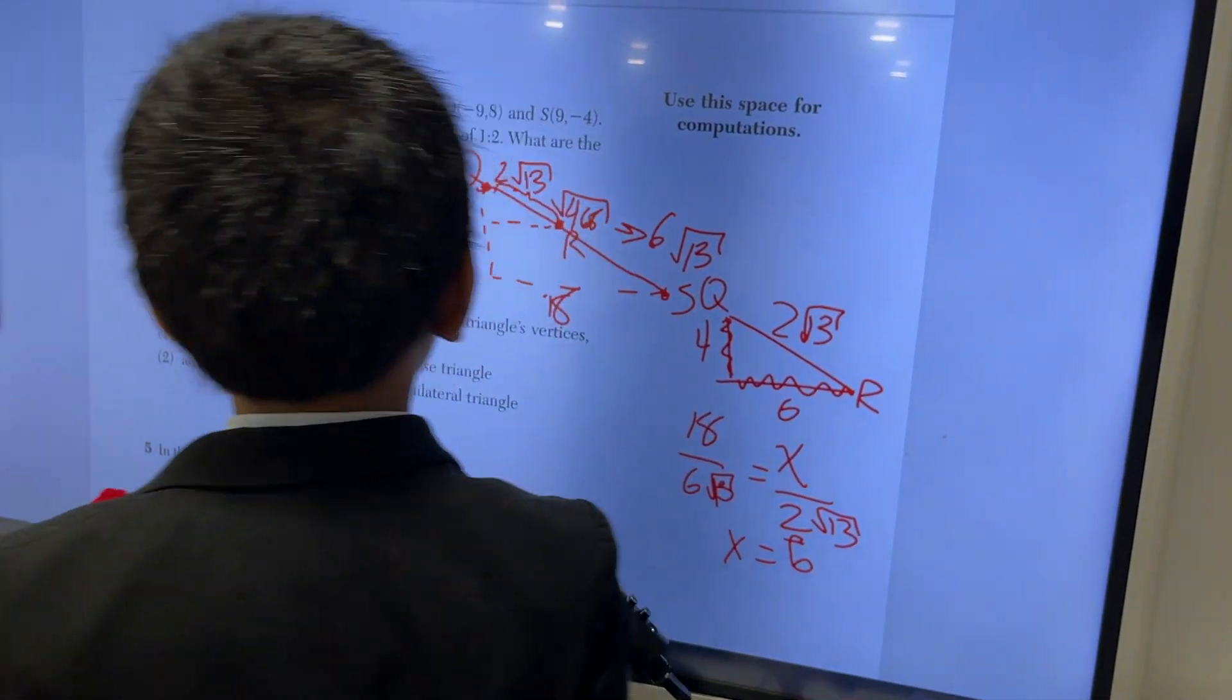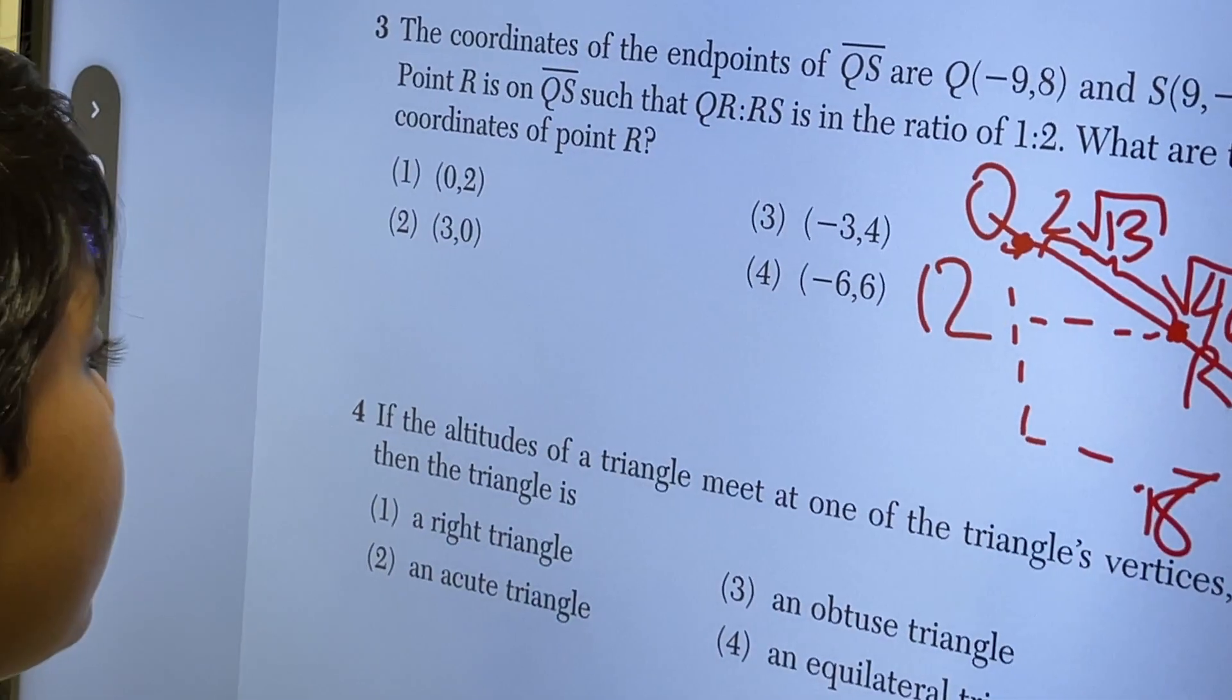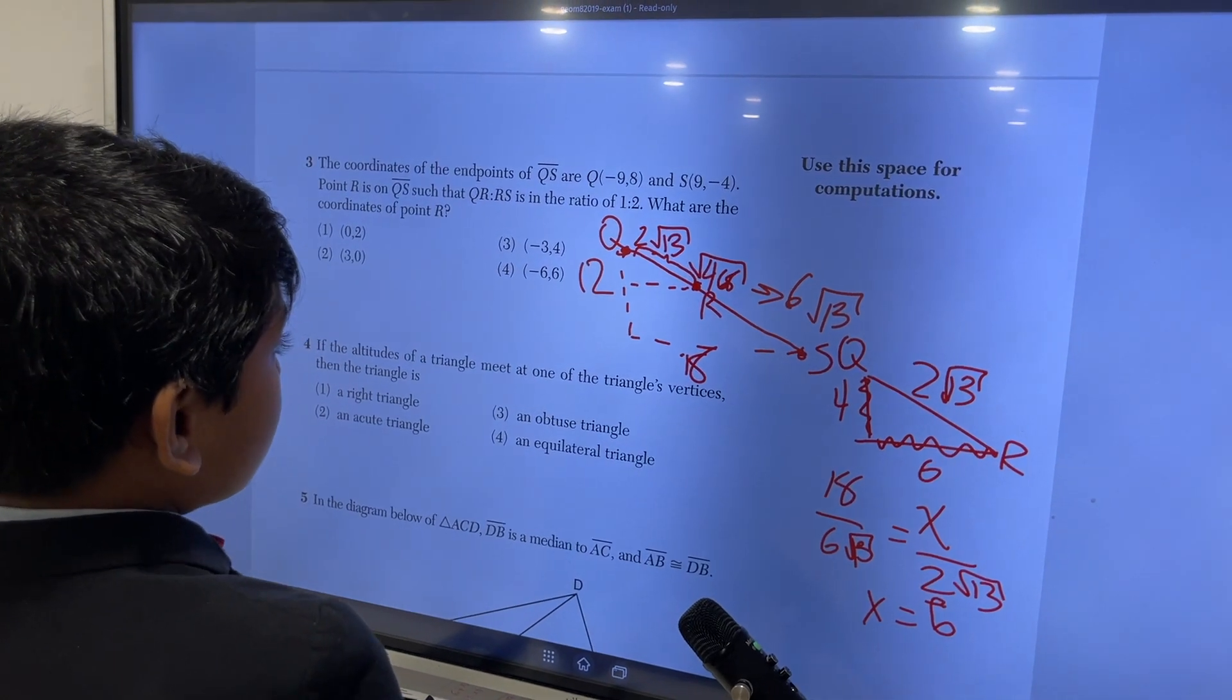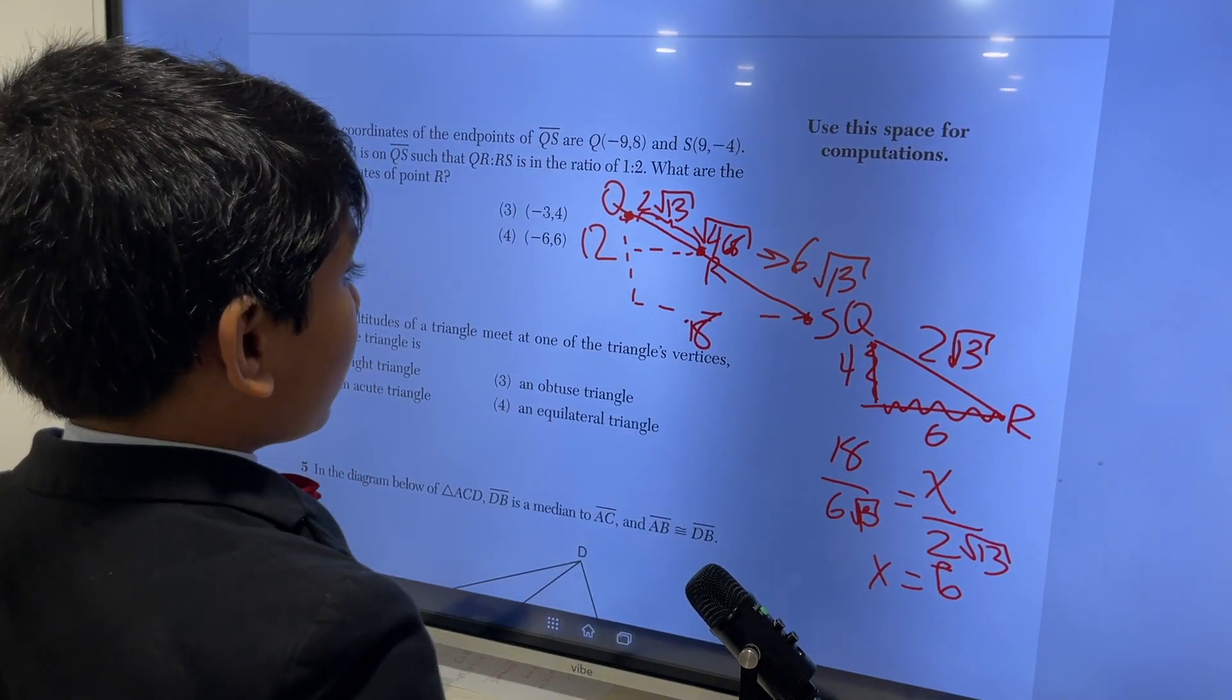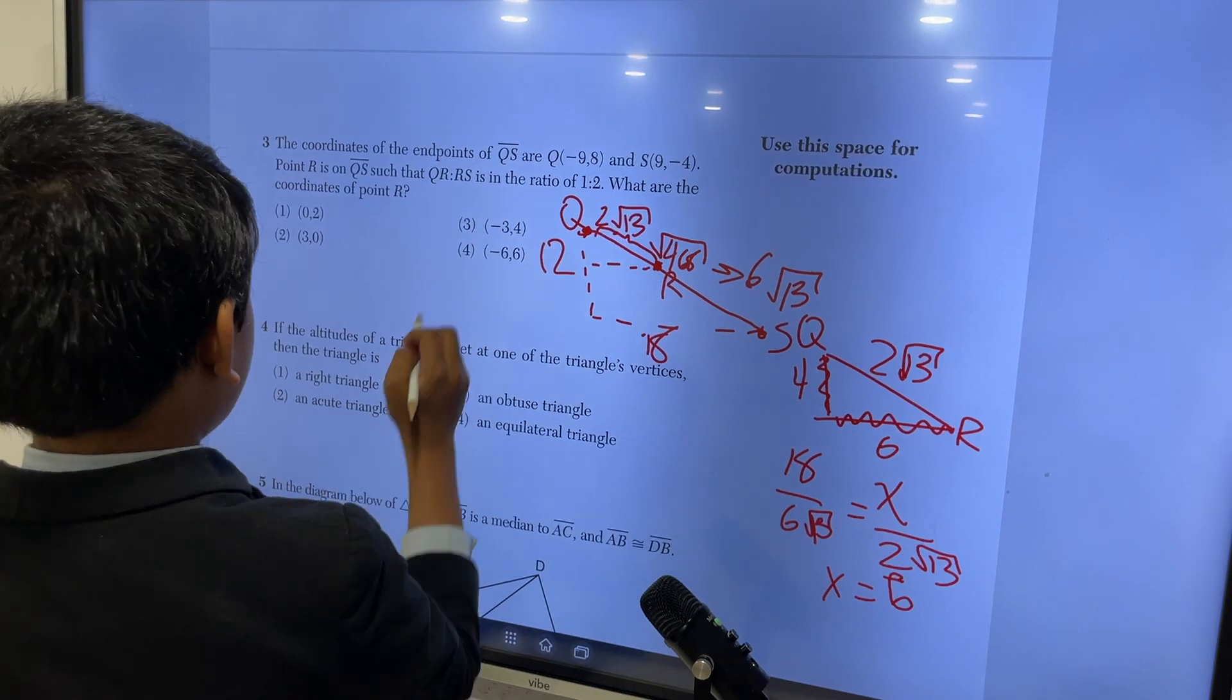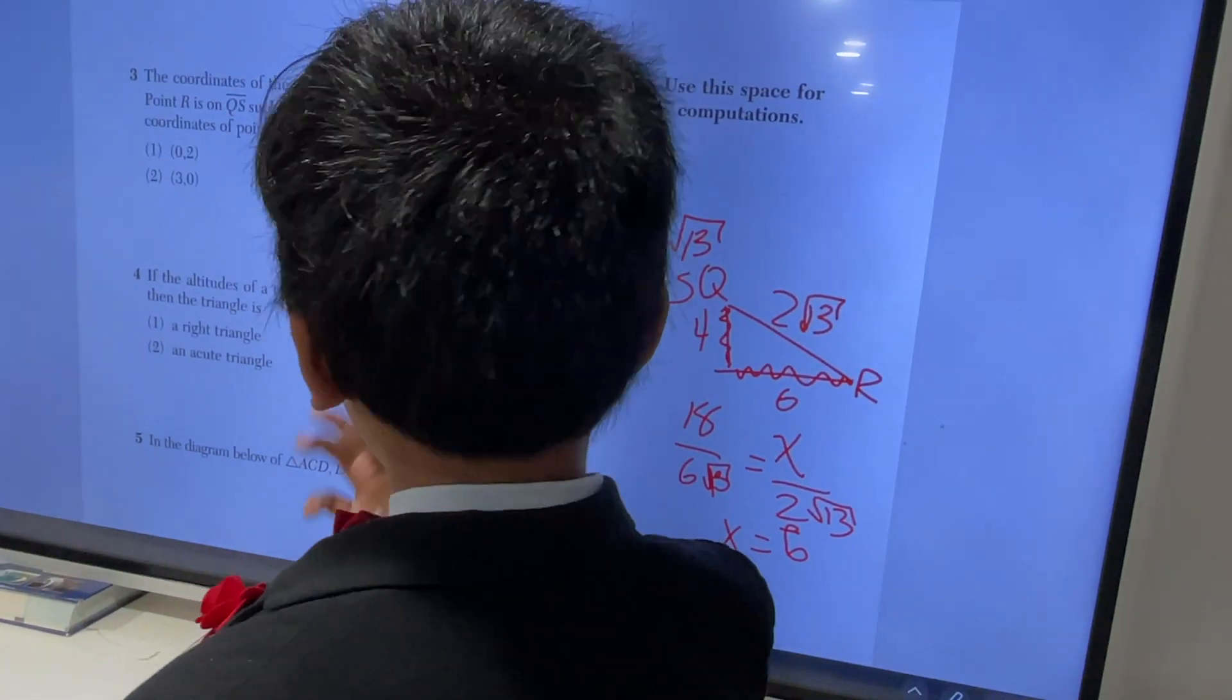So now, because you have scrap graph paper, you can do this much easier, because you can immediately deduce the coordinates of R. However, because I can't use scrap graph paper, it's going to be a bit harder. So 2 root 13, so that means that we have Q, which is negative 9, 8, and we go 4 down, which is negative 9, 4, and 6 to the right, which is negative 3, 4, which would be choice 3. Alright. So that means that 3 is choice 3. Let's move on to the next one.